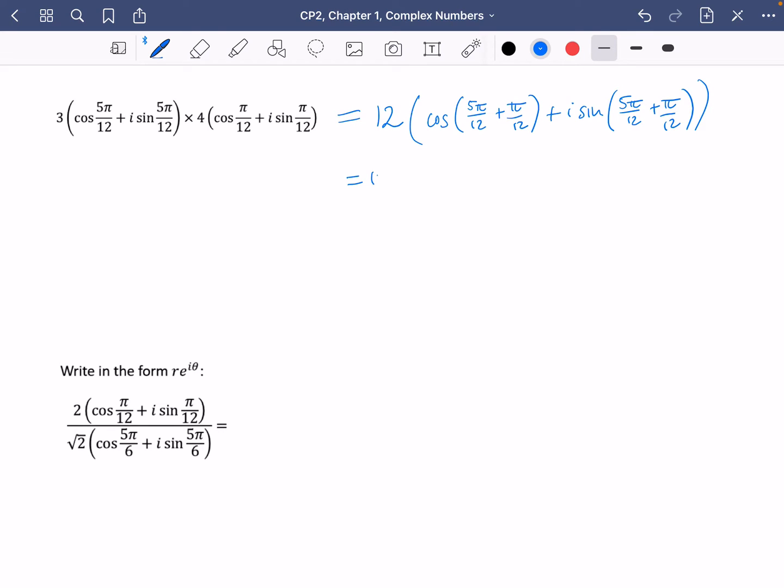So that's 5 pi over 12 plus pi over 12 plus i sine 5 pi over 12 plus pi over 12. So that is 12 cos of 6 pi over 12, which is just pi over 2, plus i sine pi over 2. Now, hopefully, you know that cos of pi over 2 is just 0. So this is just 12 i sine pi over 2. And hopefully, you also know that sine pi over 2 is 1. So this whole thing is just equal to 12 i.